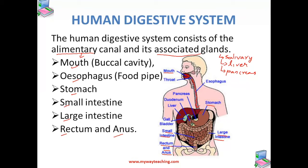Let us now locate the glands. Our salivary glands are in the mouth, somewhere near the throat. Then we come to the pancreas. The pancreas is a large cream-colored gland located under the stomach — you can see this cream color in the diagram. And the liver is reddish-brown. You can see this reddish-brown colored liver; it is situated in the abdomen on the right side. The ducts of the glands open into the alimentary canal and they release their digestive juices there.